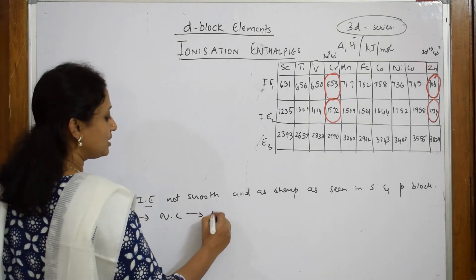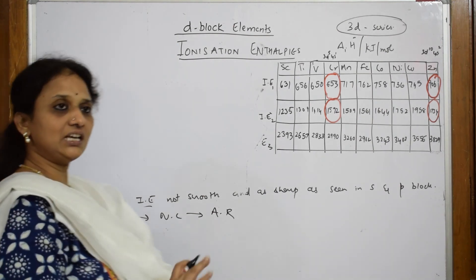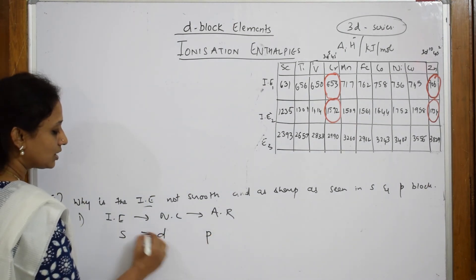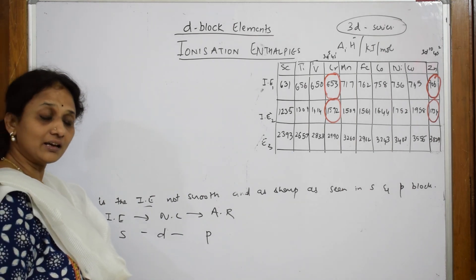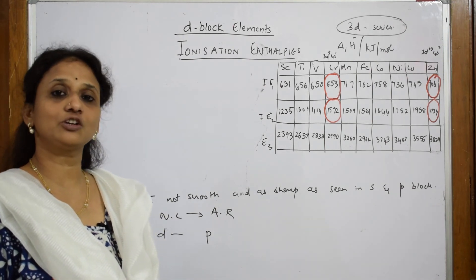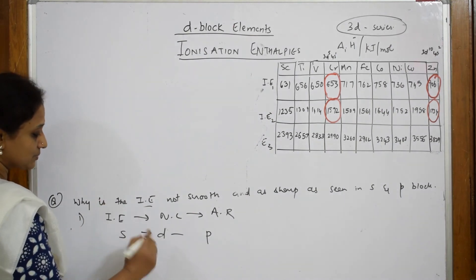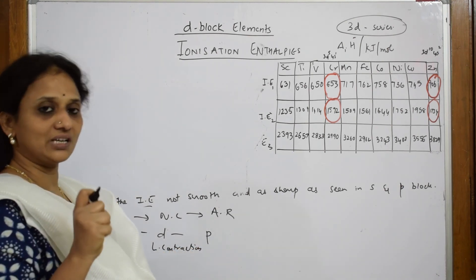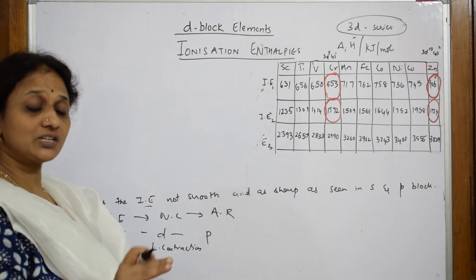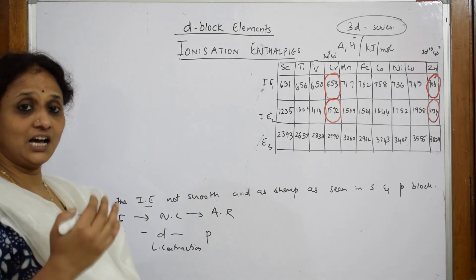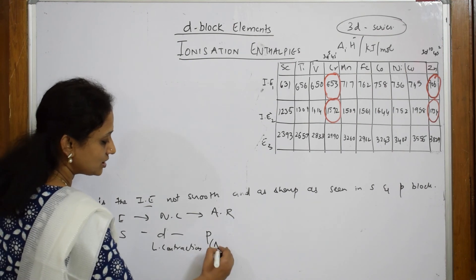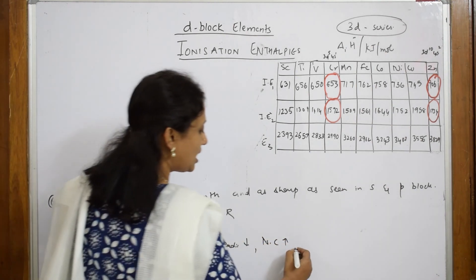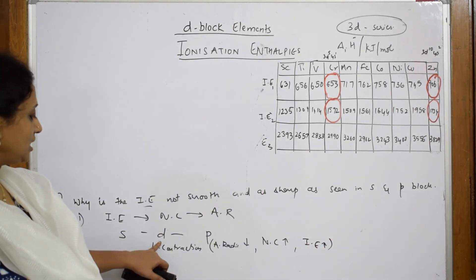When I have to see along the group and along the period, I have to compare between s block, p block and d block. What is happening in d block elements? Your effect of lanthanide contraction is acting. You are not finding that lanthanide contraction in s and p block. Because of this lanthanide contraction, the size is going to decrease. Atomic radii decreases. When the atomic radii decreases, I have to apply extra energy or the ionization enthalpy will vary. Lanthanide contraction causes atomic radii to decrease. When atomic radii decreases, nuclear charge increases. When nuclear charge increases, ionization enthalpy increases.